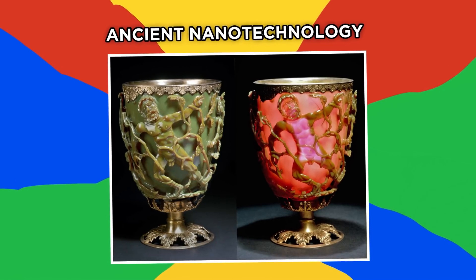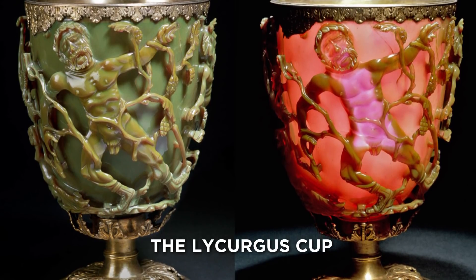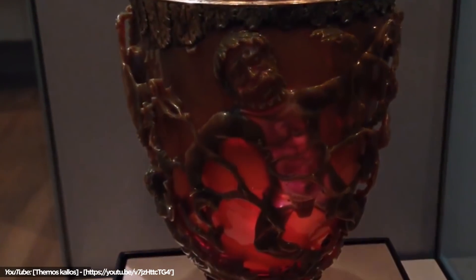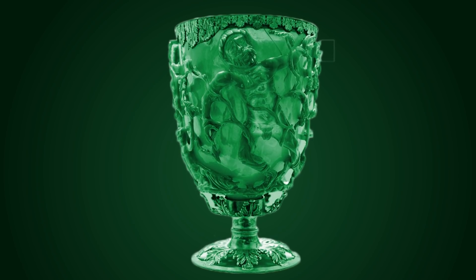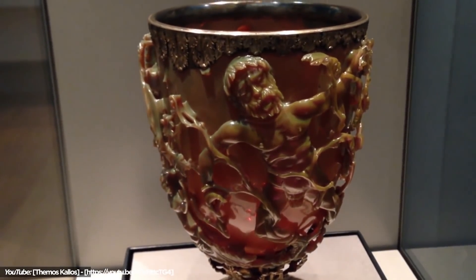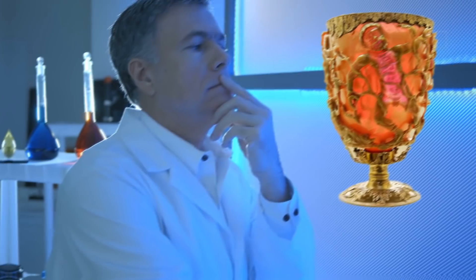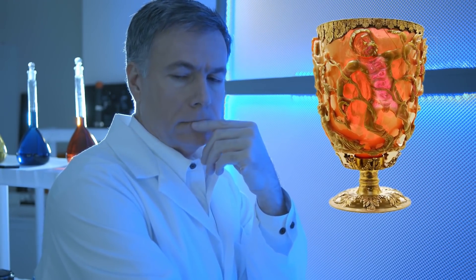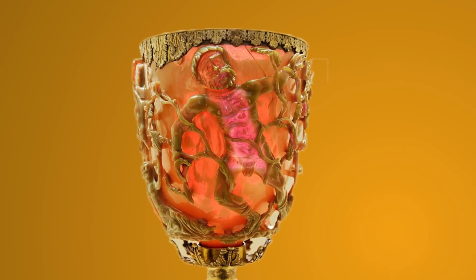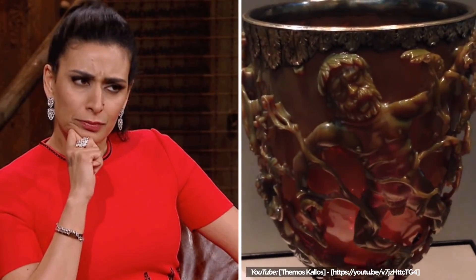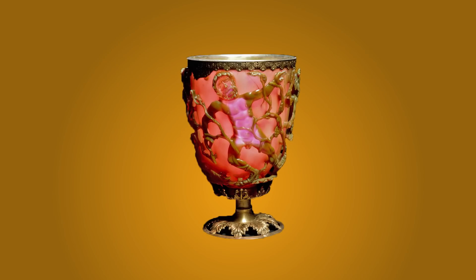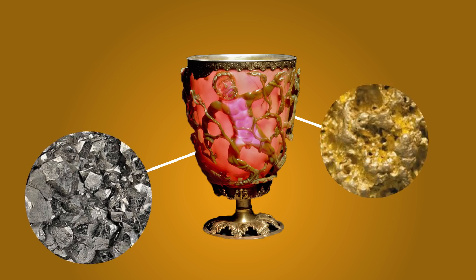Ancient Nanotechnology. The Lycurgus Cup is a fascinating piece of Roman art from the 4th century AD, known for its unusual color-changing capabilities. The cup appears green from frontal lighting and red if lit from behind, making it a technological marvel of its time. Perplexing scientists for many years, the Lycurgus Cup is now considered an example of ancient Roman nanotechnology. It sounds crazy, but it's true.